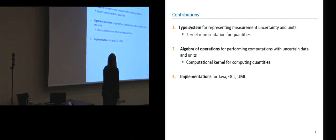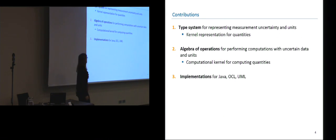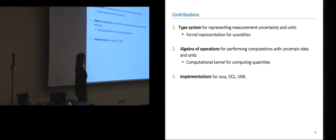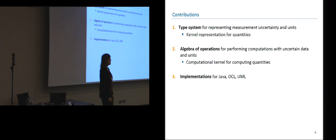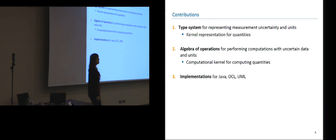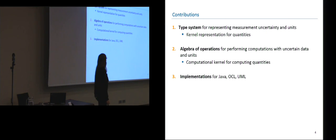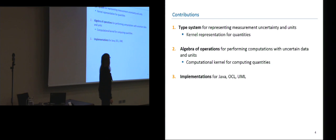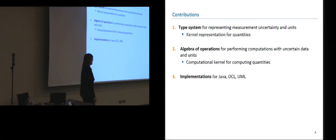So what did we do to tackle this problem? In this work, we are defining a type system for representing measurement uncertainty and units, which gives us a kernel representation for these properties. We are defining an algebra of operations that let us perform computations with such quantities, and we provide implementations for Java, OCL, and UML.